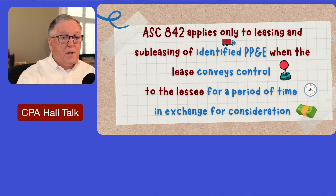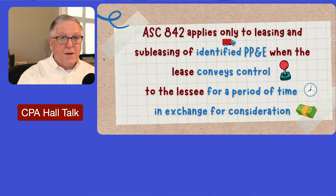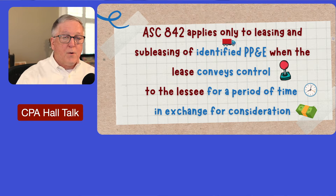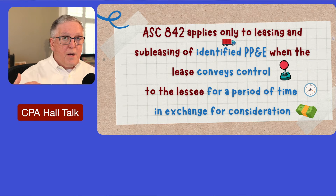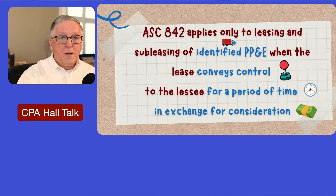The first thing you have to know is: do you have an identified asset? If the agreement says you're going to use 3% of a building, that's not necessarily an identified asset. If the agreement says you're going to use the third floor of that building, then yes, you have an identified asset. The agreement also has to convey control to the lessee for a period of time. If the agreement doesn't specify the length of time that the entity has control, then 842 doesn't apply.